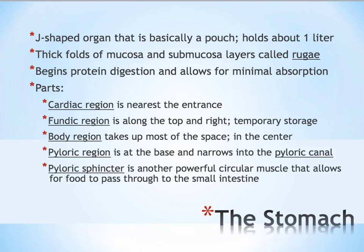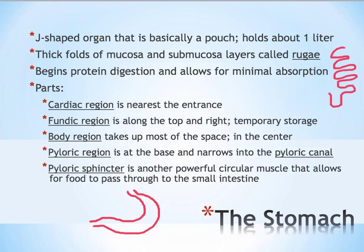The stomach is basically a J-shaped pouch that holds about a liter of fluid and food at any given time, though it can stretch to hold more. The two thickest layers are the mucosa and the submucosa — the two innermost layers of the alimentary system — and they are thick and folded throughout the stomach. As the stomach stretches out, the folds become smoother, but when the stomach is relaxed and not full, those folds are very pronounced and are called ruga.